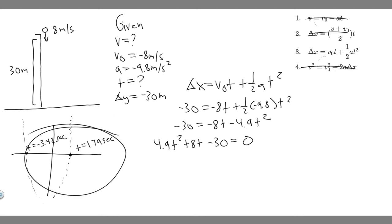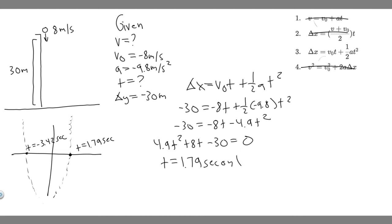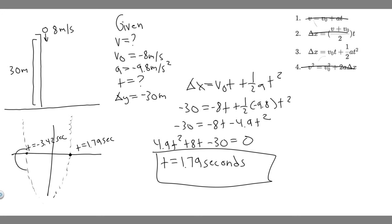Since time can't be negative in the real world, we discard t equals minus 3.42. So t equals 1.79 seconds. You can also use the quadratic formula if you'd like, but using the calculator is easiest if you're allowed to. So 1.79 seconds is the time it takes for the ball to strike the ground — that's your answer.